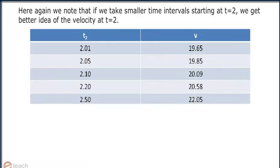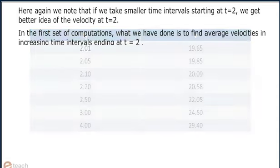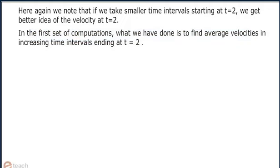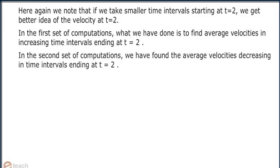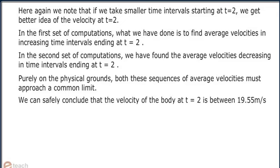Here again, if we take smaller time intervals starting at t equals 2, we get a better idea of the velocity at t equals 2. In the first set of computations, we found average velocities over increasing time intervals ending at t equals 2. In the second set, we found average velocities over decreasing time intervals ending at t equals 2. Purely on physical grounds, both sequences of average velocities must approach a common limit. We can safely conclude that the velocity of the body at t equals 2 is between 19.55 meters per second and 19.65 meters per second.